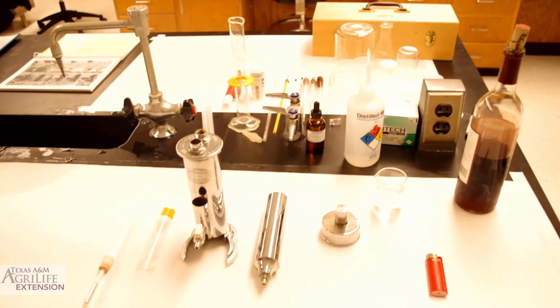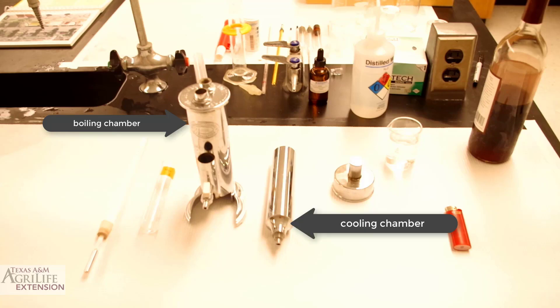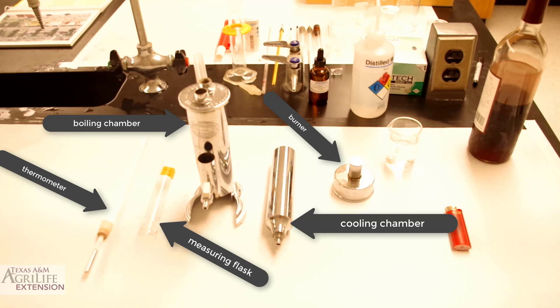Hello and welcome to our classic ebuliometry video. This is a classic Dujardin Salerand ebuliometer. It is made up of a boiling chamber, a cooling chamber, and it comes equipped with a thermometer, a burner, a measuring flask, and the calibration and results indicator dial.